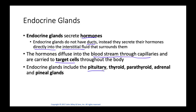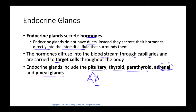Some examples of endocrine glands include the pituitary gland, which has an anterior pituitary — also called the adenohypophysis — and a posterior pituitary, also called the neurohypophysis. We'll also cover the thyroid, the parathyroid, the adrenal glands, and the pineal gland. The word 'adrenal' contains 'renal,' meaning kidney, because the adrenal gland sits above the kidney.